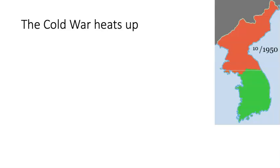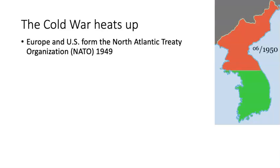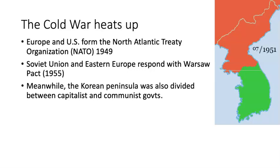In 1950, things really heat up. Here you see a gif of the North Korean and Chinese advances in red pushing down the Korean Peninsula beginning in 1950, then the Allies pushing back north all the way to the Yalu River, then the Chinese pushing back south again — back and forth throughout the war, ending in a stalemate where they stop where they began. NATO is forming in Europe, and the Soviet Union responds with the Warsaw Pact five or six years later.